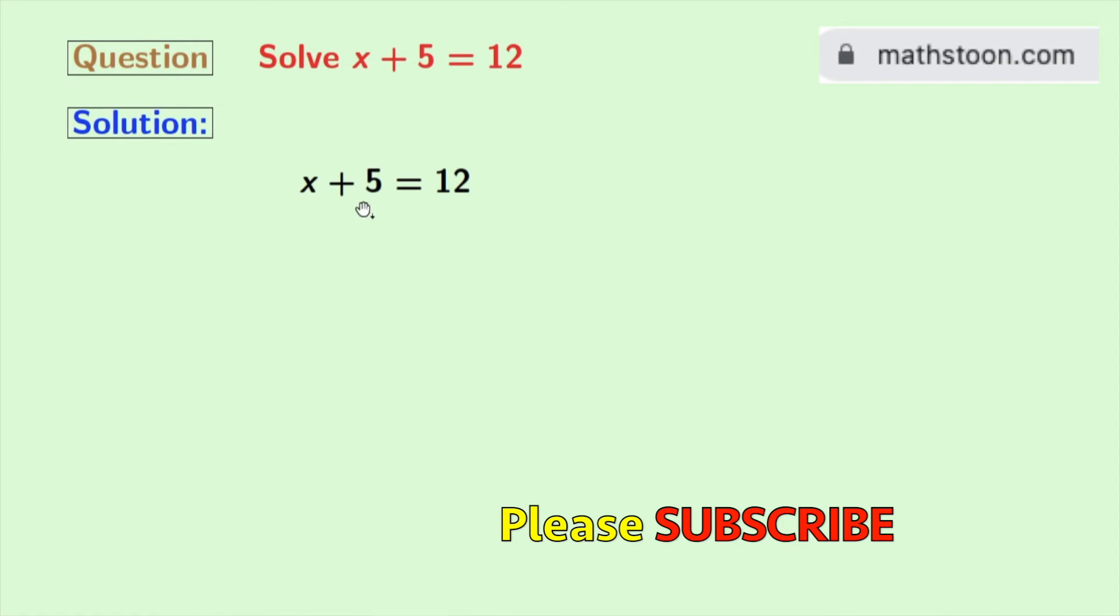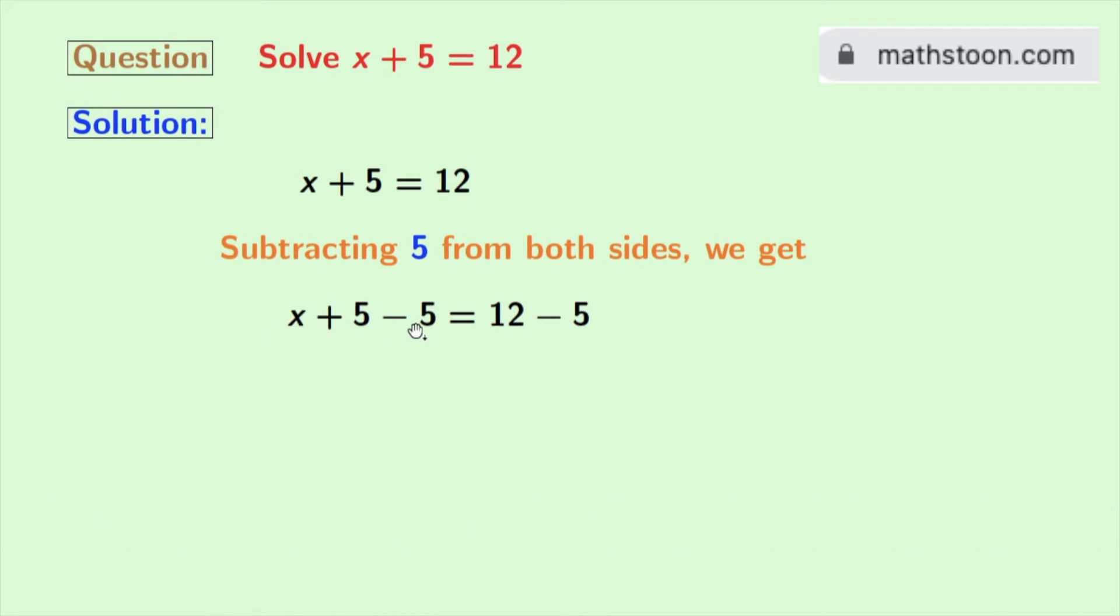This is our given equation. Now to get the value of x, we will subtract 5 from both sides. Doing that we get x plus 5 minus 5 is equal to 12 minus 5.